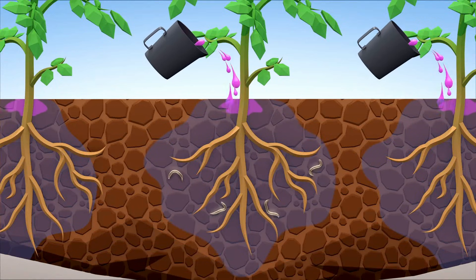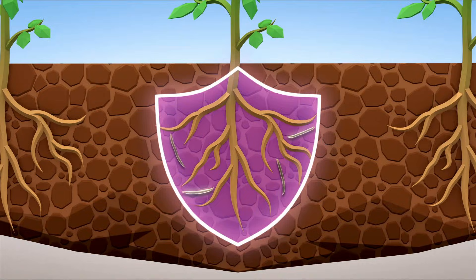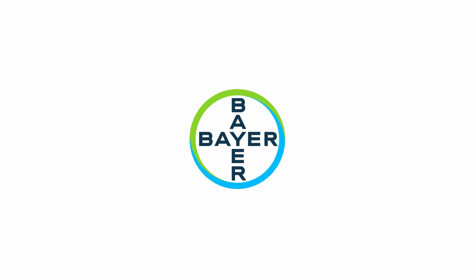The active substance is applied to the soil to target and protect the root system. Treatment of Vellum Prime helps to provide a healthy root system that enables good plant growth and high yield production.